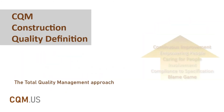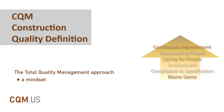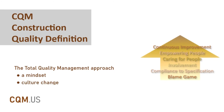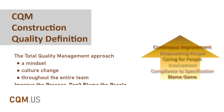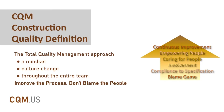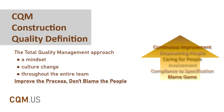The total quality management approach is a mindset and culture change throughout the entire team, involving all stakeholders and engaging all participants in a teamwork setting where processes are blamed rather than people. No one will hide problems as they are detected, because everyone is involved in the continuous improvement cycle that empowers people to take care of each other rather than playing the blame game.